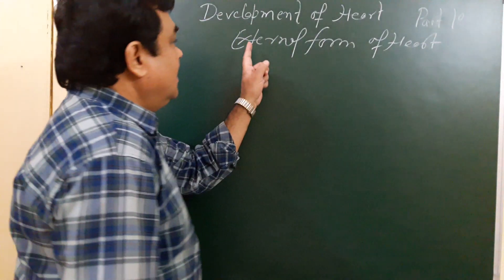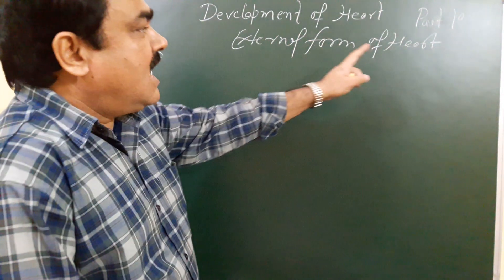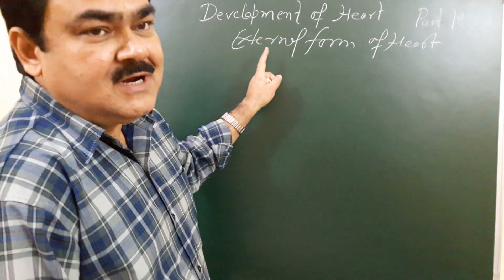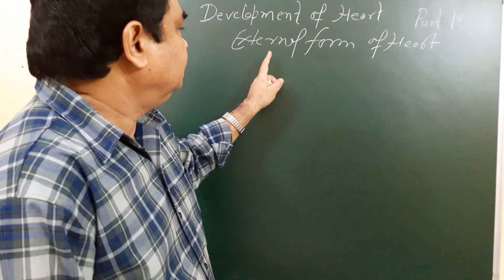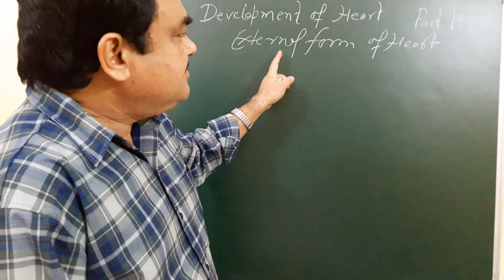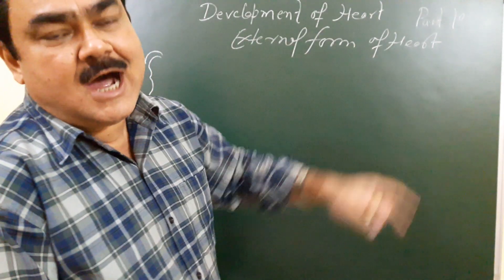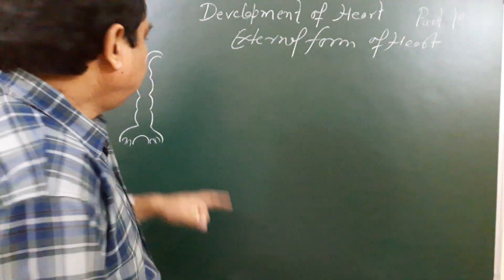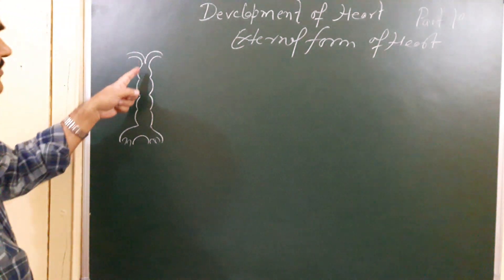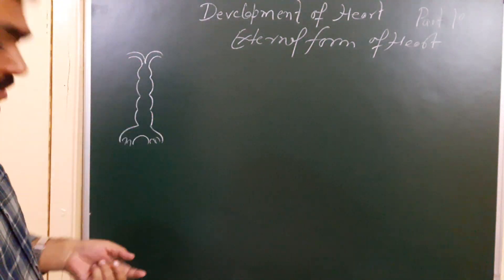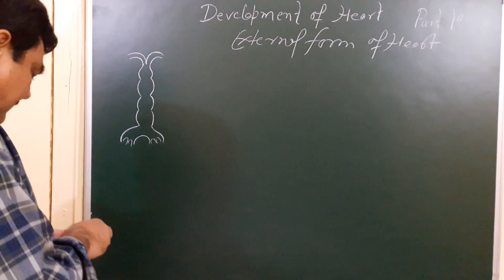Development of the heart, part 10. In this part we'll discuss about the establishment of the external form of the heart. Initially, you have seen this is like a tube-like structure.